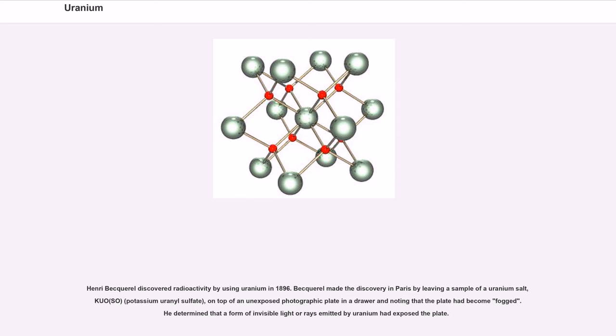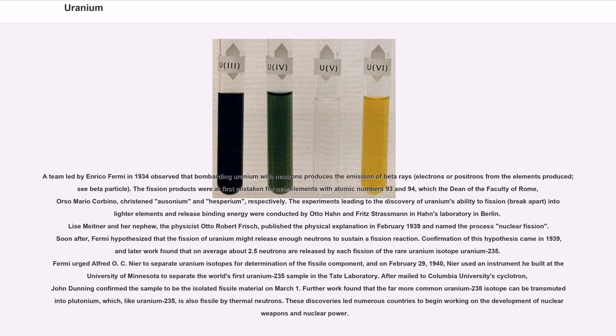Henri Becquerel discovered radioactivity by using uranium in 1896. Becquerel made the discovery in Paris by leaving a sample of a uranium salt on top of an unexposed photographic plate in a drawer and noting that the plate had become fogged. He determined that a form of invisible light or rays emitted by uranium had exposed the plate. A team led by Enrico Fermi in 1934 observed that bombarding uranium with neutrons produces the emission of beta rays. The fission products were at first mistaken for new elements with atomic numbers 93 and 94. The experiments leading to the discovery of uranium's ability to fission into lighter elements and release binding energy were conducted by Otto Hahn and Fritz Strassmann in Hahn's laboratory in Berlin. Lise Meitner and her nephew, the physicist Otto Robert Frisch, published the physical explanation in February 1939 and named the process nuclear fission.